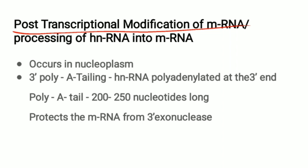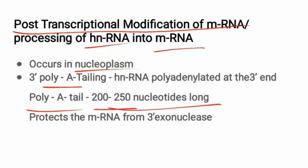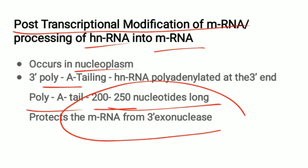Post-transcriptional modification of mRNA — the processing of hnRNA (heteronuclear RNA or immature RNA) into mature mRNA — occurs in the nucleoplasm. First, polyadenylate residues are added at the 3' end, forming a poly-A tail of 200 to 250 nucleotides, which protects the mRNA from 3' exonuclease.